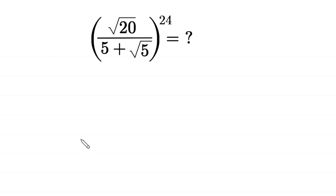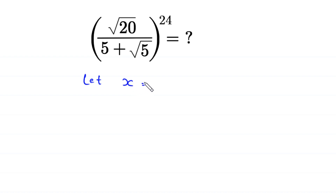Hello, welcome to how to solve this very nice square root algebra problem. Square root of 20 over 5 plus square root of 5, whole to the power 24. So, let us start. First of all, we suppose that this expression inside the parenthesis is equal to x. Let x be equal to square root of 20 divided by 5 plus root 5.